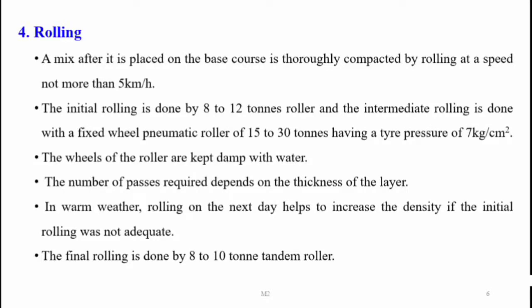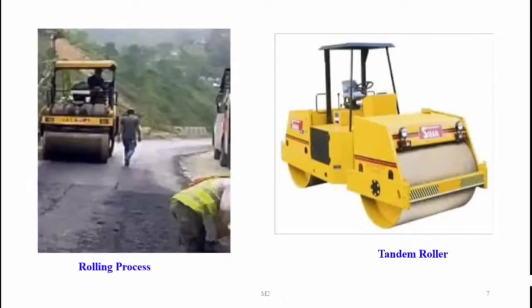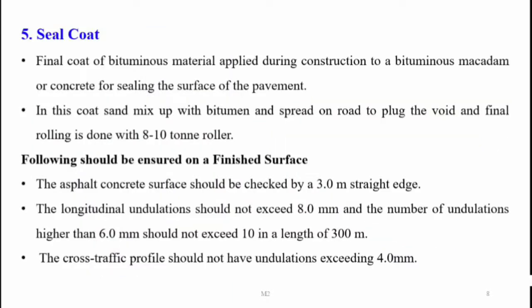If rolling is done in warm weather conditions, rolling on the next day helps to increase density if the initial rolling was not adequate. You can also see the tandem rollers used for this process. Moving on to the next step, seal coat is the final coat applied to a bituminous concrete surface to seal the pavement. The seal coat is a mix of sand with bitumen, spread on the road to plug voids, and final rolling is provided with 8 to 10 ton tandem rollers.